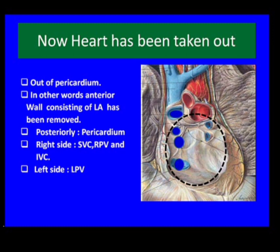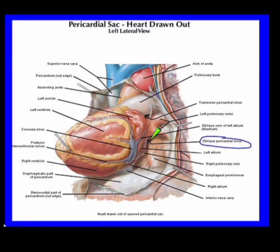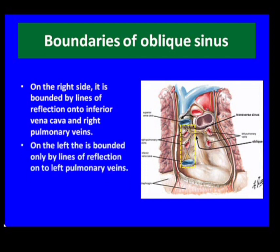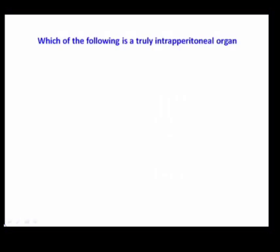Posteriorly there is pericardium. On the right side there are the superior vena cava, right pulmonary veins, and inferior vena cava. On the left side there are the left pulmonary veins, and inferiorly it is open in the form of a cul-de-sac. This cul-de-sac opens into the pericardial cavity. The boundaries of oblique sinus are: on the right, lines of reflection onto the inferior vena cava and right pulmonary veins; on the left, lines of reflection onto the pulmonary veins.